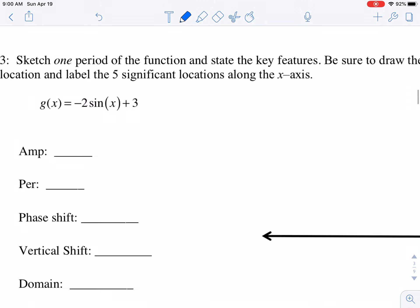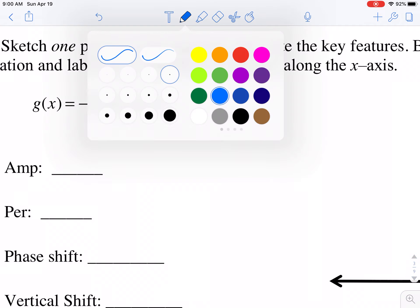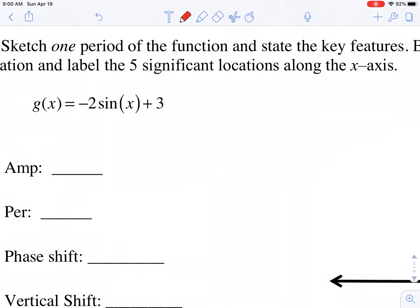Okay, so notice that this is almost the same graph as the one we just drew. The only difference is that we have this plus three. So when we think about that plus three, that's a vertical shift up three. So that means basically we're taking the graph that we drew just a second ago, and we're shifting the whole thing up three.